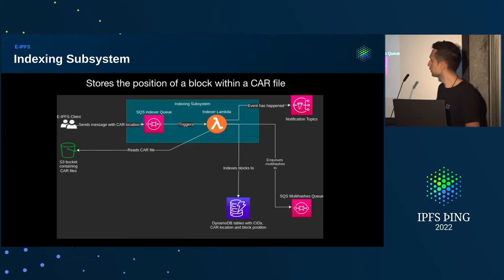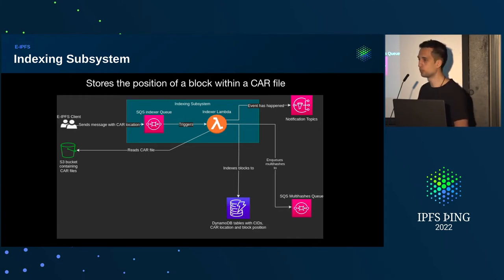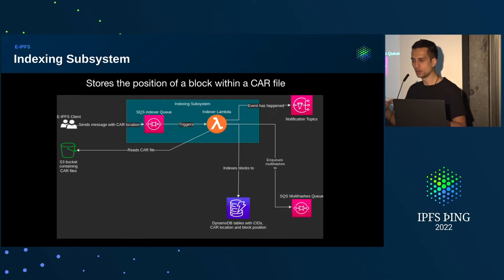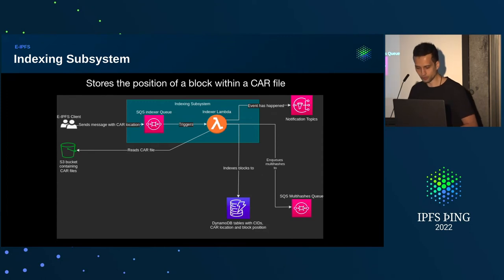One thing that is interesting about the elasticity is that the lambda has a limit from AWS — it can scale up to 1,999 concurrent runs. But with the load we currently have, we are way below that; we run like 15 to 20. So it's handling everything very well.